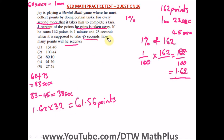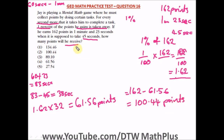Finally, how many points will he receive? We subtract 61.56 from 162. What is 162 minus 61.56? That gives us 100.44 points. So he will receive 100.44 points after we've taken away the points he lost — because for every second more it took him to complete the task, 1% of his points was taken away. The correct answer is Option 2.